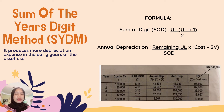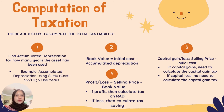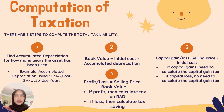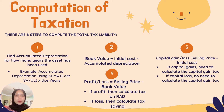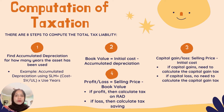Using the same example as the double declining balance method, construct the depreciation table for the sum of years' digit method. Next is computation of tax liabilities. There are eight steps to compute the total tax liability. Step one is accumulated depreciation — how many years the asset has been used. For example, accumulated depreciation using the straight line method equals cost minus salvage value divided by useful life, multiplied by used years.